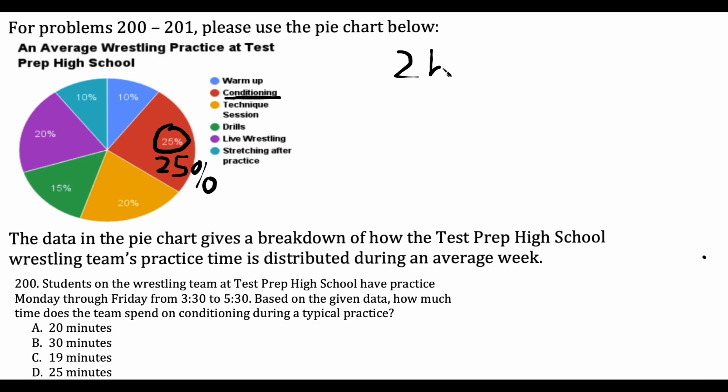You could just do 2 times 0.25 to find 25% of two hours. But what I'm going to do here first is take this two hours and convert it into minutes. One hour is 60 minutes, so two hours would be 120 minutes.